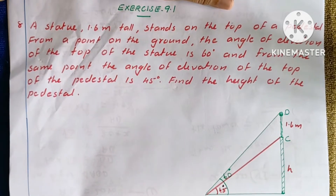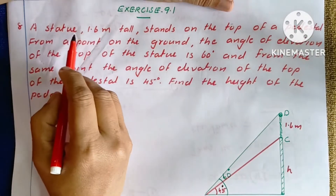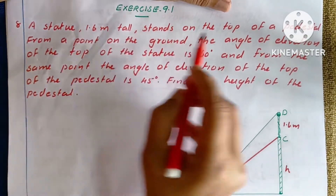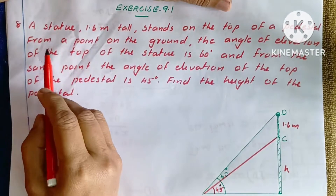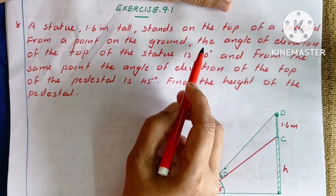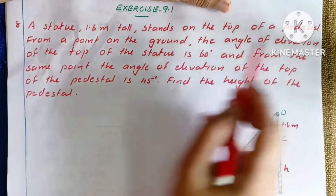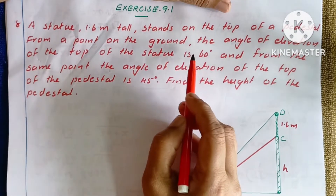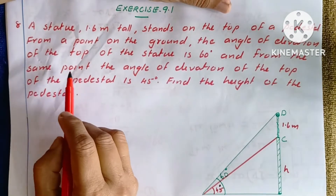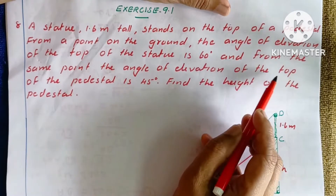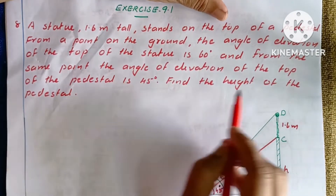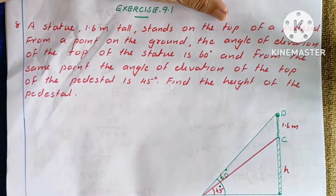We are going to study: a statue 1.6 meters tall stands on the top of a pedestal. From a point on the ground, the angle of elevation of the top of the statue is 60 degrees. And from the same point, the angle of elevation of the top of the pedestal is 45 degrees. Find the height of the pedestal.